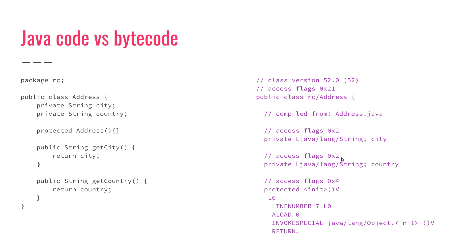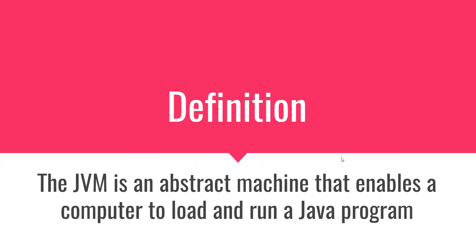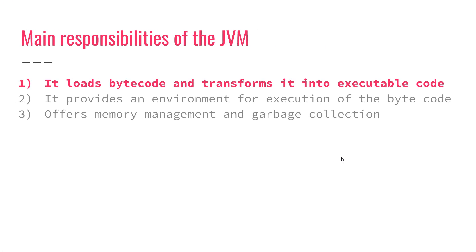Based on what we've seen, you're now ready to give a definition for the JVM. The JVM is an abstract machine that enables a computer to load and run a Java program. It's called an abstract machine because it's not something physical — it's a software program that runs in your operating system. The first main responsibility of the JVM is to load bytecode and transform it into executable code.